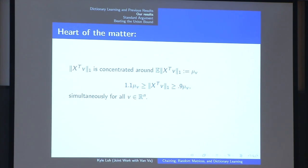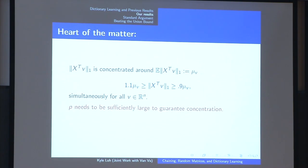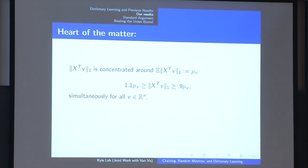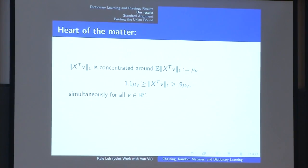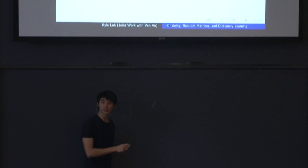If you didn't care about the dictionary learning part, this is a nice opportunity to start caring again — because we've abstracted away most of the application and we're going to focus on this concentration result for the rest of the talk. The subtle thing is that we want this concentration to hold for all v in R^n simultaneously. X is an n by p matrix, and each entry is a product of an indicator random variable and a sub-Gaussian; they are all independent.